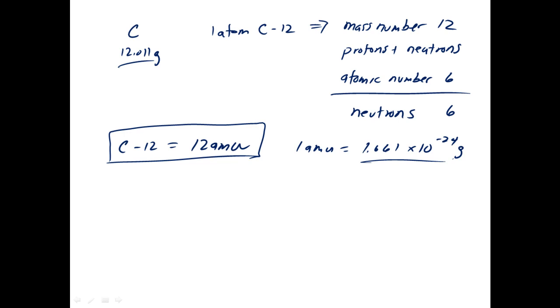Well, we define that one atom of carbon-12 weighs exactly 12 atomic mass units. And we also define that one mole of carbon-12 weighs exactly 12 grams. And we'll talk about a mole here in a minute. But these are important concepts that one atom of carbon-12 weighs exactly 12 atomic mass units. One mole of carbon-12 weighs exactly 12 grams.